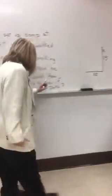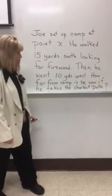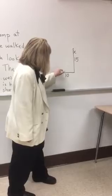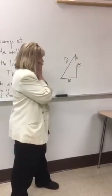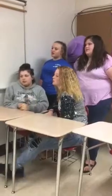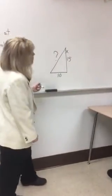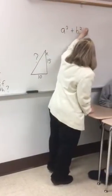The question says, how far from camp is he now if he takes the shortest path? So I'm going to draw the shortest path back to camp. Now, what will I use to find the shortest path? The Pythagorean Theorem, which is A squared plus B squared equals C squared. So I'm going to write that down: A squared plus B squared equals C squared.